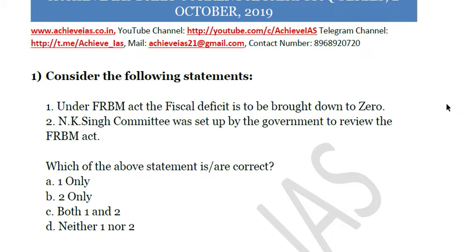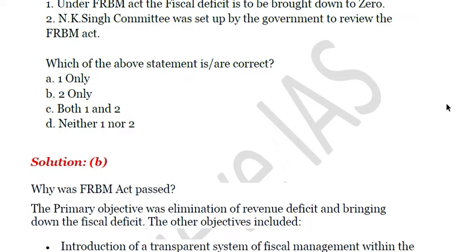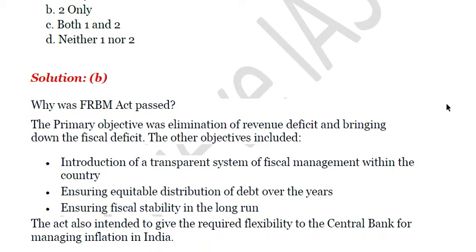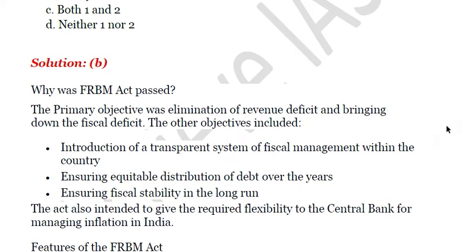Only one statement is correct, and that is the second. So the answer would be B — second only. The primary objective of the FRBM Act is to basically eliminate the revenue deficit and bring down the fiscal deficit. Other objectives include the introduction of a transparent system of fiscal management within the country and ensuring equitable distribution of debt over the years.